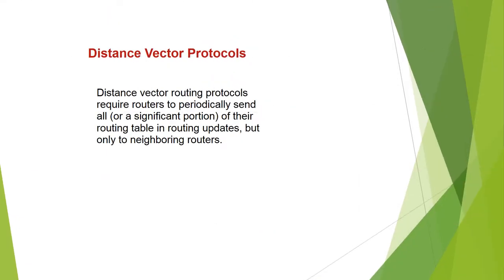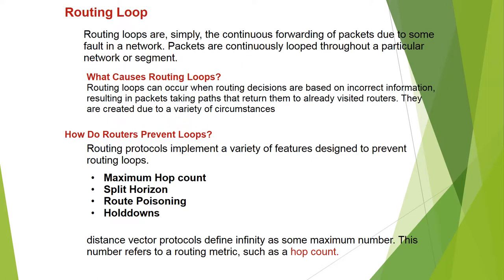Distance vector routing protocol requires routers to periodically send all or a significant portion of their routing table in routing updates, but only to neighboring routers. Routing loops are the continuous forwarding of packets due to errors in the network — packets continuously loop throughout a particular network or segment. Routing loops can occur when routing decisions are based on incorrect information, resulting in packets taking paths that return them to an already-visited route.